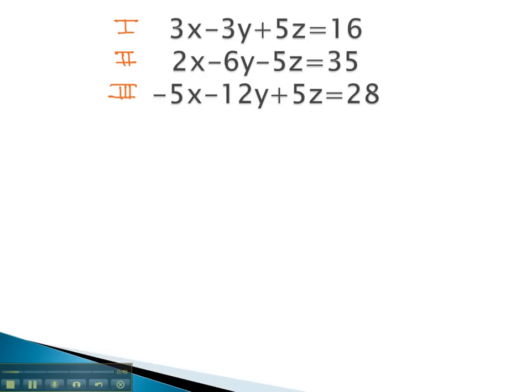As we look at these equations, I'm looking for a variable that would be easy to eliminate by combining two equations together. You may notice equations 1 and 2 have a positive 5z and a negative 5z. This tells me it would be really easy to eliminate the z. So let's do that using equations 1 and equation 2.